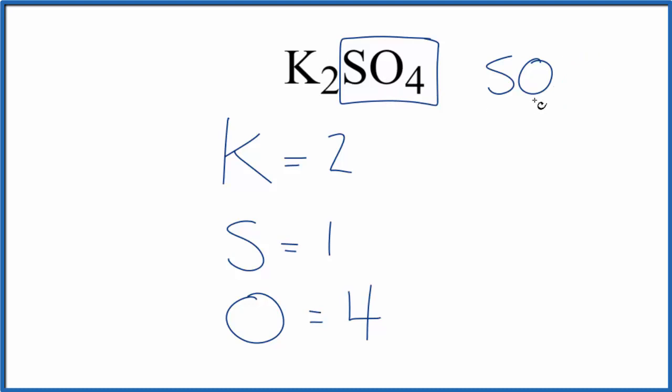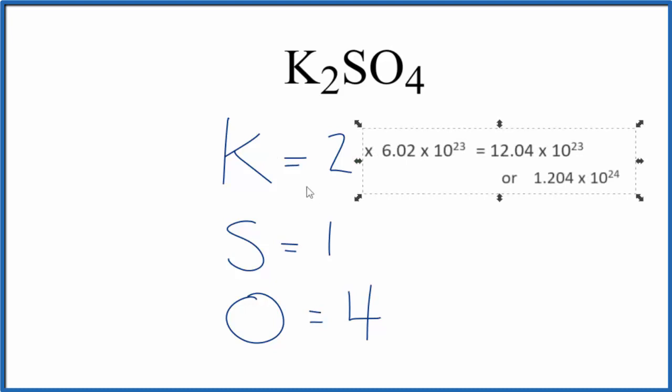Sometimes you're asked how many atoms there are in one mole of K2SO4. For example, how many potassium atoms will there be in one mole of K2SO4? To figure that out, we multiply the number of atoms here by Avogadro's number. So two times Avogadro's number, that gives us 12.04 times 10 to the 23rd atoms.